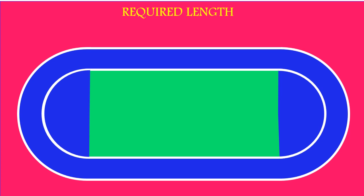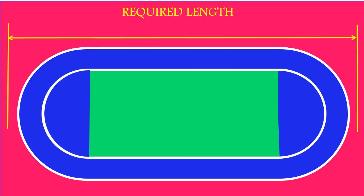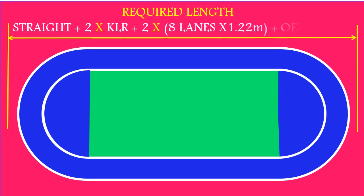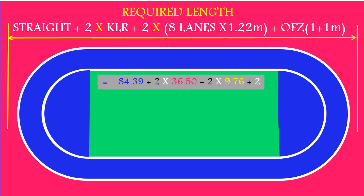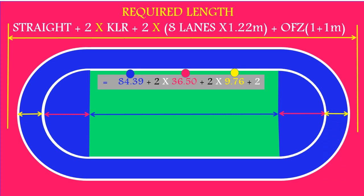Here we are going to see the required length to layout a 400 meter standard track. The formula is: stride plus 2 into KLR plus 2 into 8 lanes width plus obstacle free zone. Here each color identifies each distance. That is 84.39 meters plus 2 into 36.50 meters (Curb Line Radius) plus 2 into 9.76 meters (width of 8 lanes) plus 2 meters obstacle free zone.